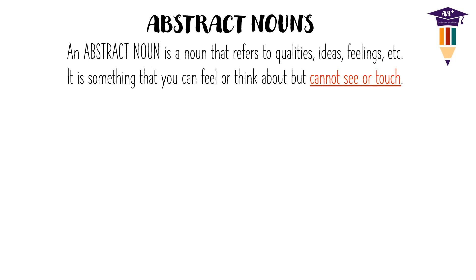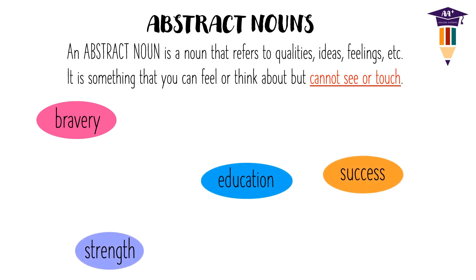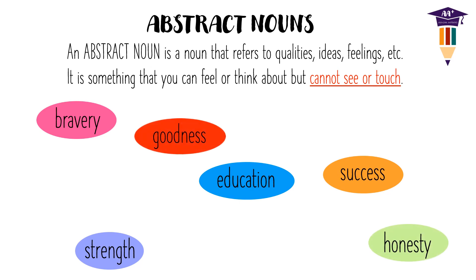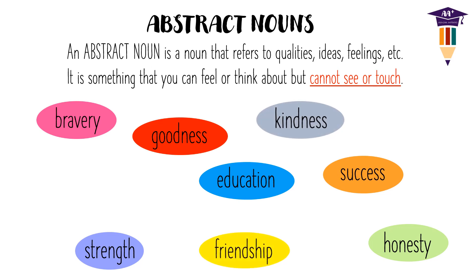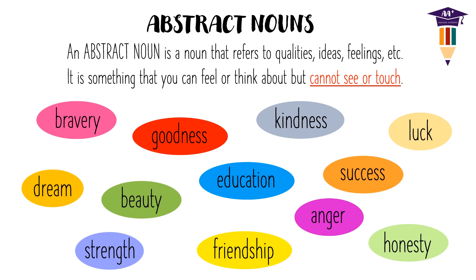The different examples of abstract nouns are as follows: bravery, success, strength, education, honesty, goodness, kindness, friendship, dream, luck, anger, beauty, etc.